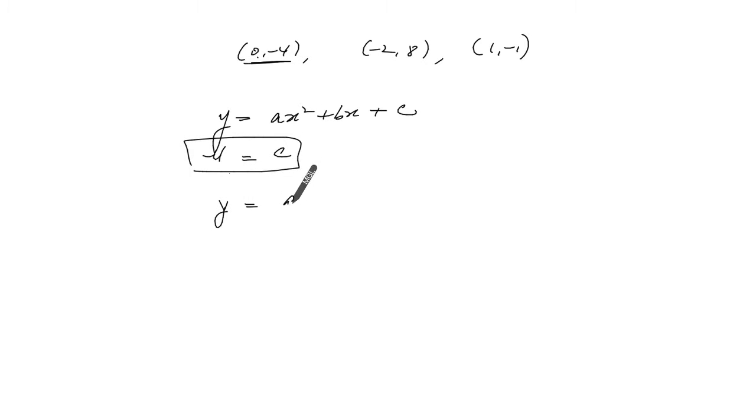So far we have ax² + bx - 4. Let's plug this in now. So when y equals 8, x equals -2, that's 4a - 2b - 4.